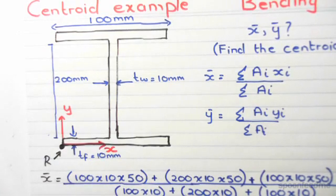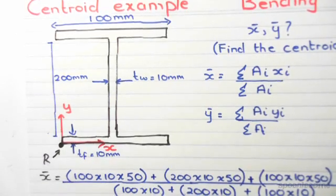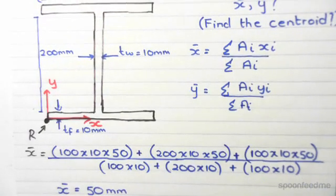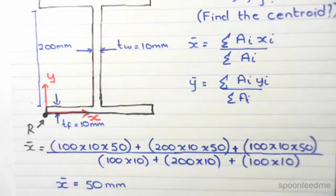When we do x̄, we consider the distance of the center of an element horizontally from the reference point. So let's say we're doing x̄ - we do the sum of area times distance away from the reference point, the distance of the center of an element horizontally from the left hand corner.